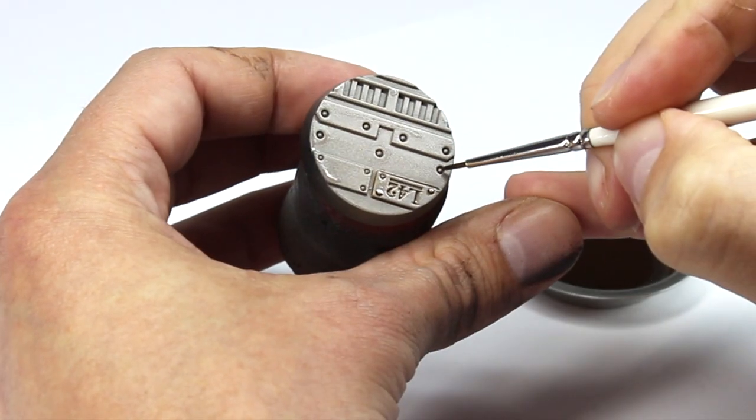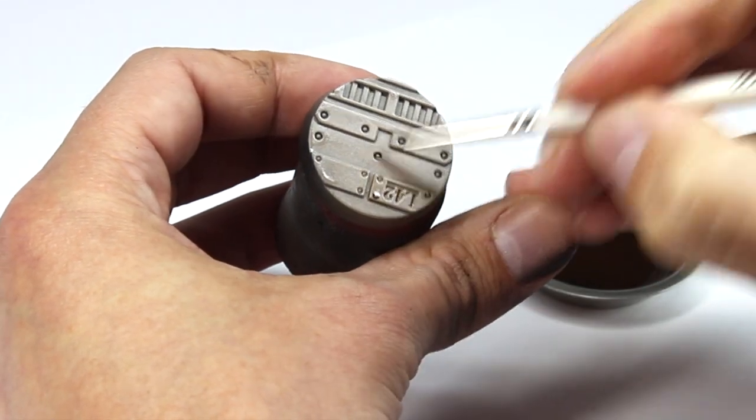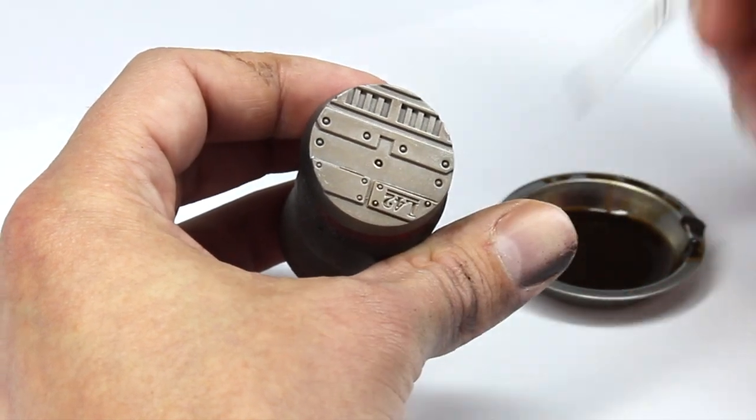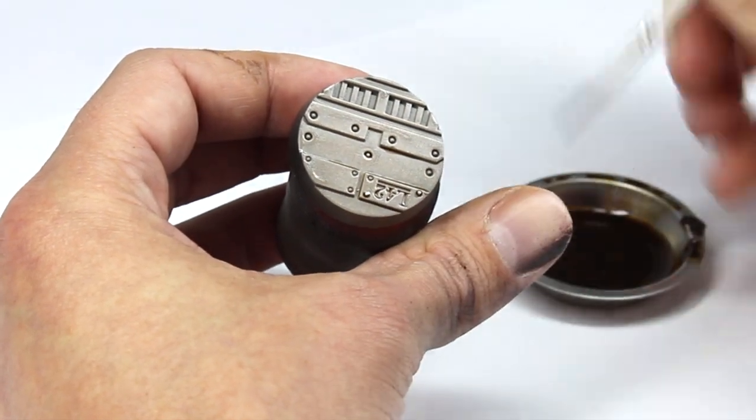Just like with contrast or with our enamel paints, if we get anywhere we don't want it, we can get a dry Q-tip and just wipe off that excess whilst the paint's still wet.